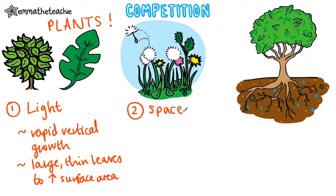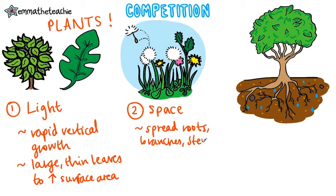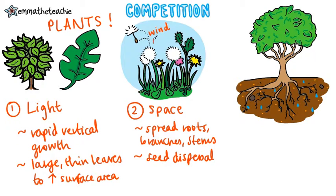Plants also compete for space. Often they are very crowded, so they spread their roots, stems and branches. And when they disperse their seeds, they try and get the seeds as far away as possible from the parent plants, so that the seeds will have enough space of their own to grow. In this example, you can see that the dandelion is using wind to spread its seeds.